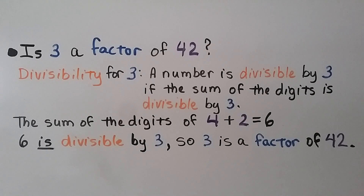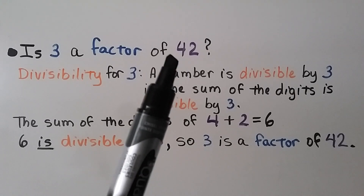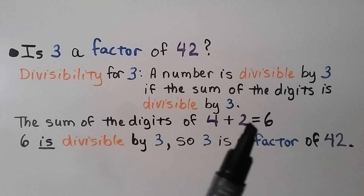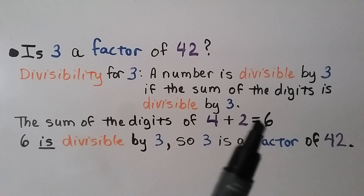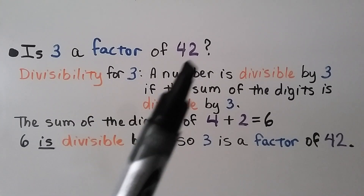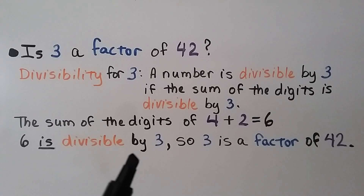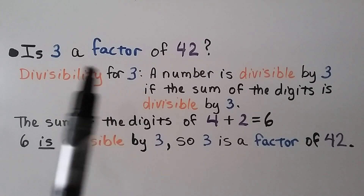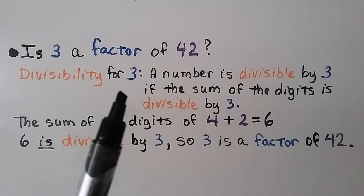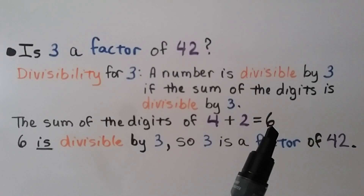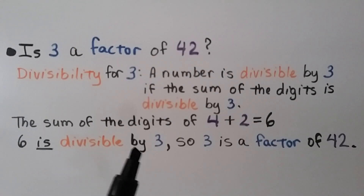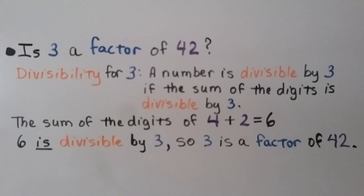Is 3 a factor of 42? The divisibility rule for 3 says a number is divisible by 3 if the sum of the digits is divisible by 3. We take the 4 and the 2 from 42 and add them together — they equal 6. If that sum, 6, is divisible by 3, then 3 is a factor of 42. And 6 is divisible by 3: 6 divided by 3 is 2, a whole number with no remainder. So 3 is a factor of 42.